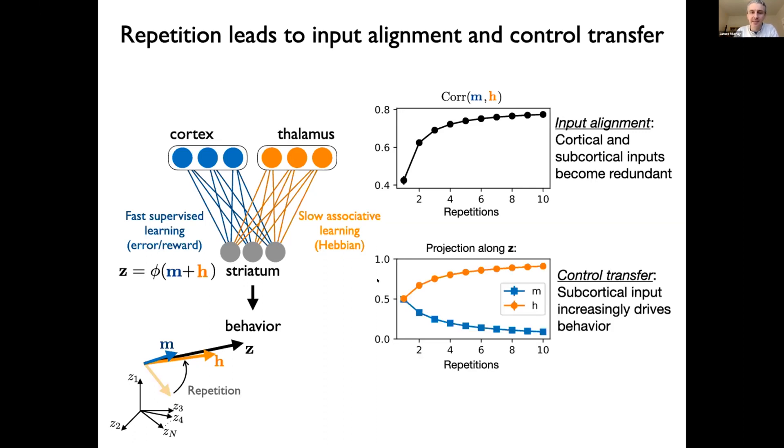The second effect that I want to point out is what we call control transfer. So here we have the projection along the activity vector of these two vectors, the orange one and the blue one. And if they're normalized so that they sum to one, we see that the orange vector is increasingly responsible for driving the activity in striatum as a pattern is learned more and more. So we say that there's a transfer of control from the first pathway to the second pathway as a pattern is repeated. So that after you've repeated a behavior many times, it's really your thalamus that's running the show, not your cortex anymore, according to this theory.